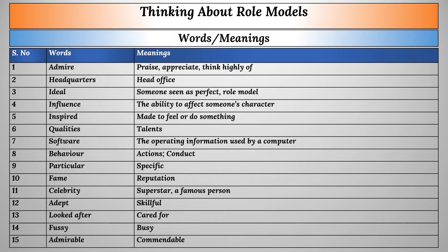Now, words and meanings. The first word is 'admire' — it means to praise, appreciate, or think highly of someone. The next word is 'headquarters' — it means head office. 'Ideal' means someone seen as perfect or a role model. 'Influence' means the ability to affect someone's character.